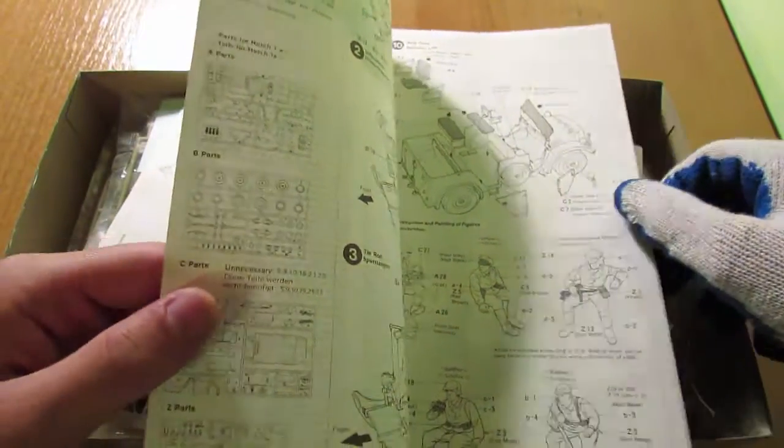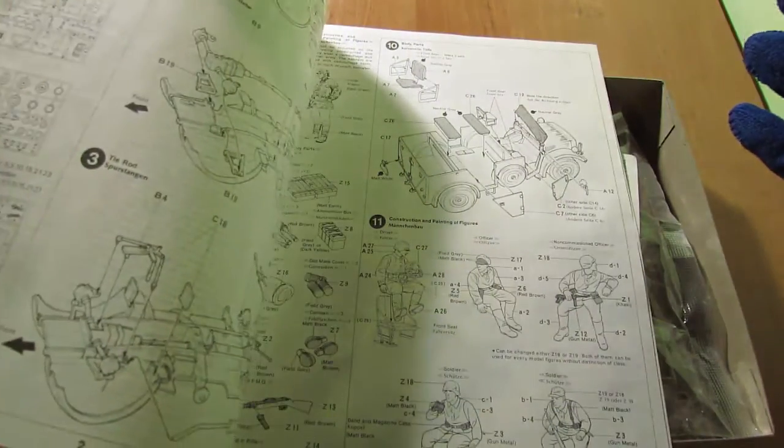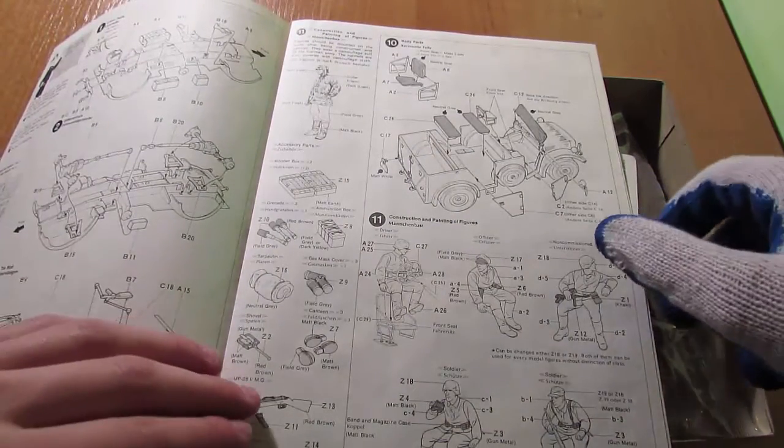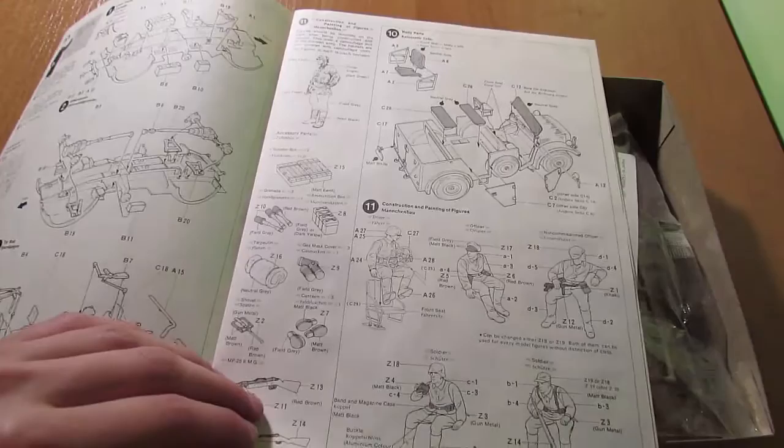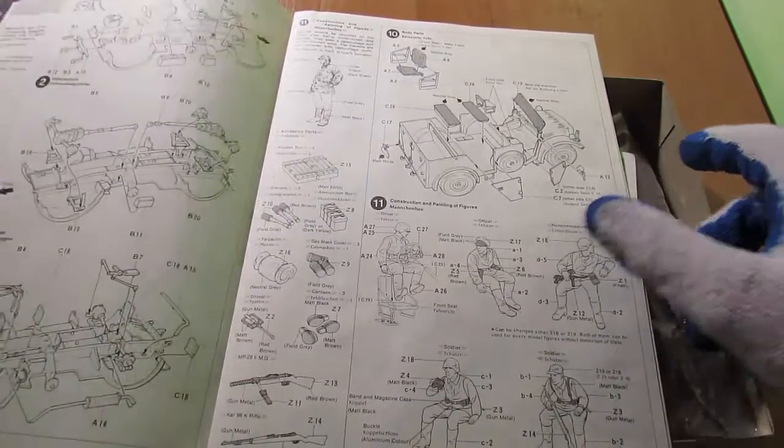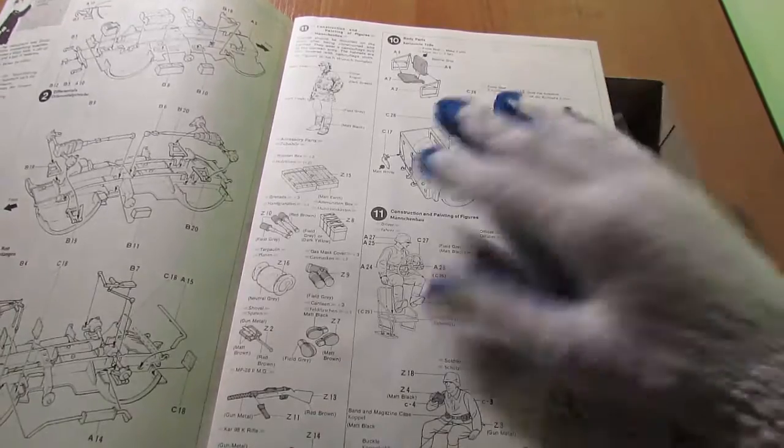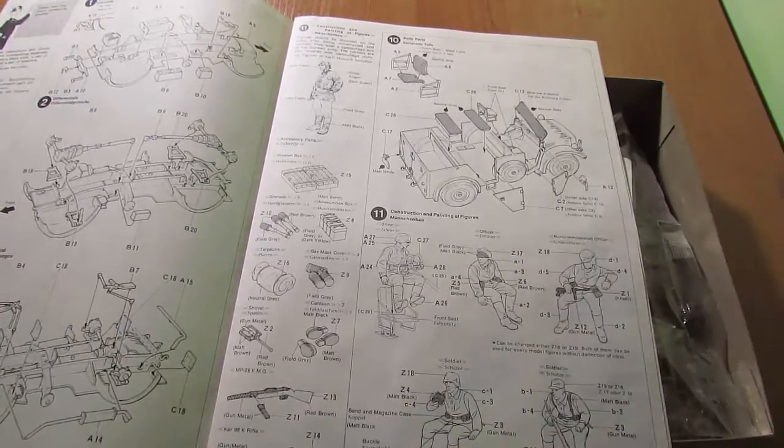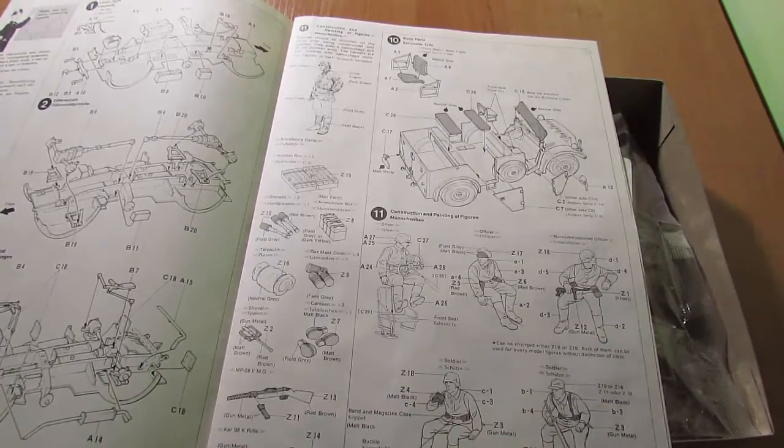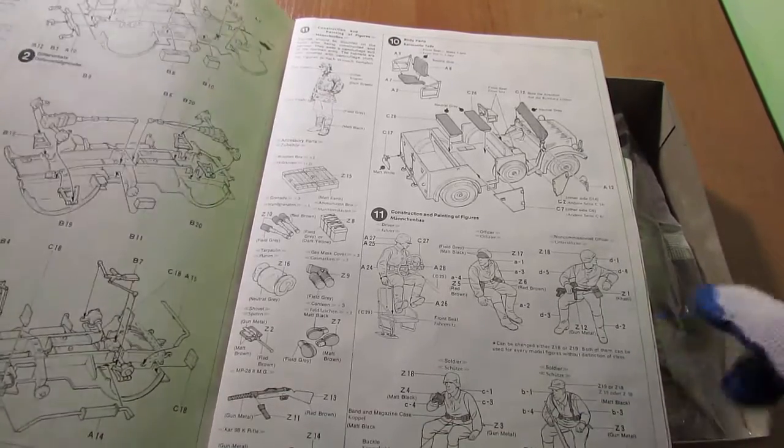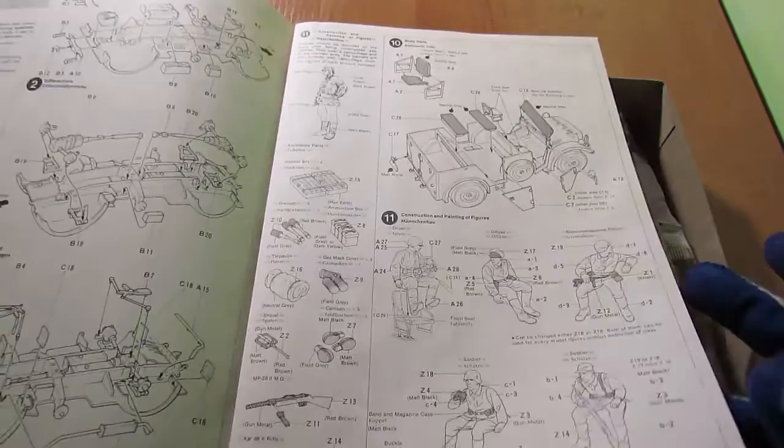Jako ciekawostkę mogę powiedzieć, że to jest model zawiera trzy modele. Tak, to jest trochę dziwne i tautologiczne, ale tak jest. Już wam tłumaczę o co chodzi. Sam Horch to jest jeden model. Później mamy zestaw pięciu żołnierzyków - to jest drugi model. I działko przeciwlotnicze to jest trzeci model. Czyli w zasadzie w cenie jednego otrzymujemy trzy.